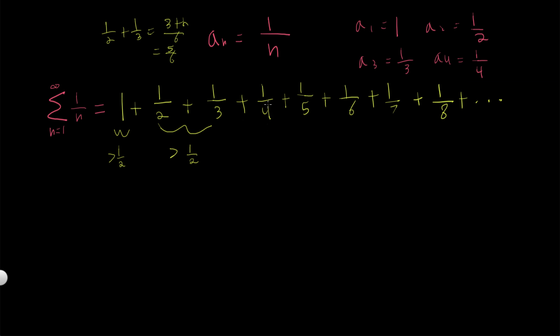Now, what if we add 1 fourth, 1 fifth, 1 sixth, 1 seventh together? Let's see what happens then. Well, 1 fourth plus 1 fifth, that's 5 plus 4 over 20. So that's 9 over 20, right?